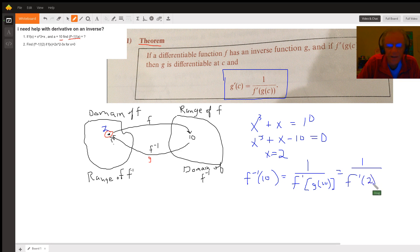But how do I find f prime of 2? Well, f prime of x is the derivative of f, which is 3x squared plus 1. So f prime of 2 has to equal 3 times 4 is 12, plus 1 is 13. So this has to be 1 thirteenth. That's the answer to the problem.